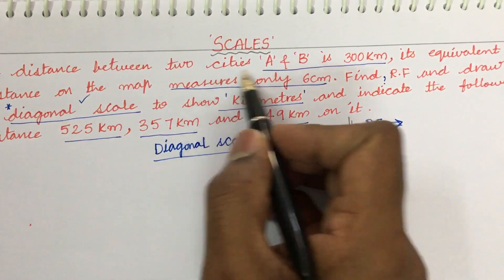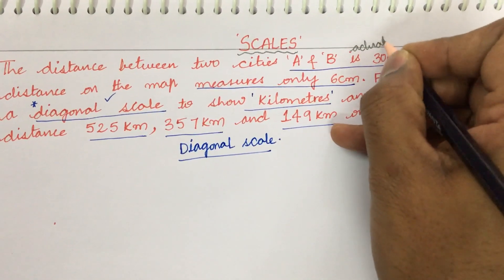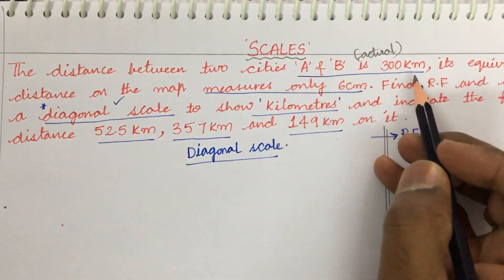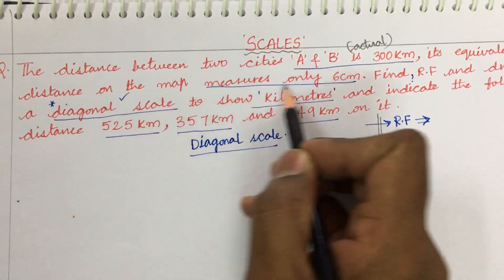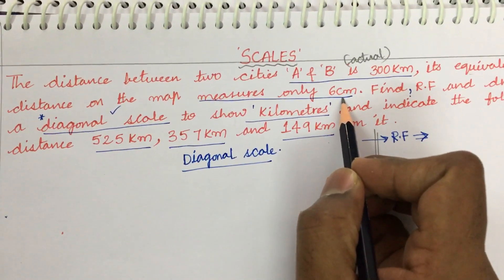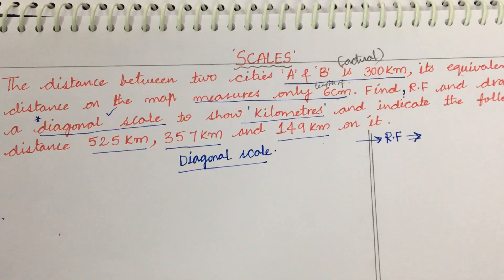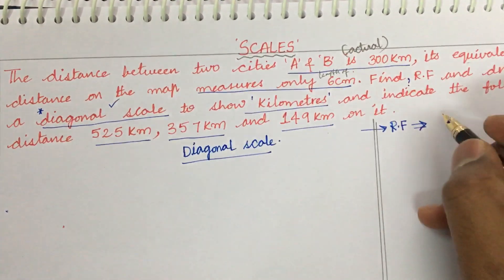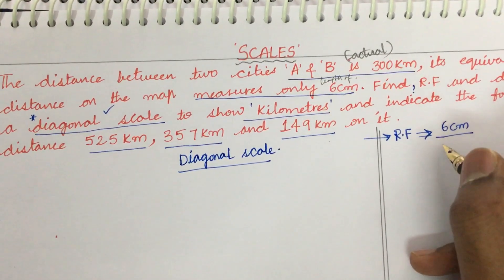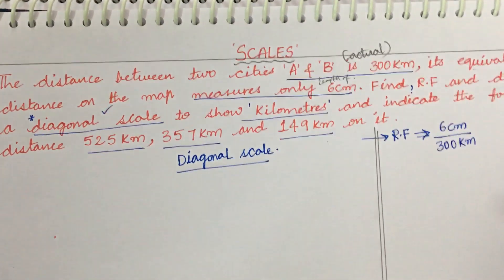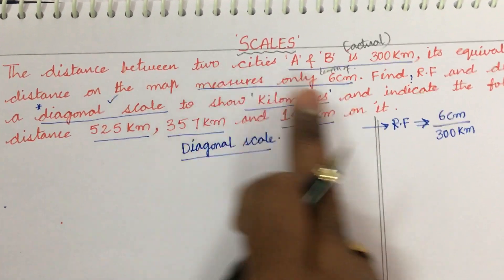If you look at this, the distance between cities A and B is 300 km — that is the actual distance. Its equivalent distance on the map measures 6 centimeters — that is the length of the drawing on the scale. So, as we know the definition of RF, it is nothing but the length of the drawing on the scale, which is 6 centimeters, upon the actual distance, which is 300 kilometers.